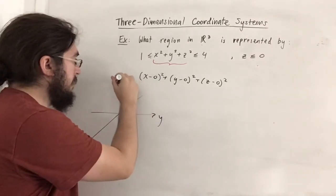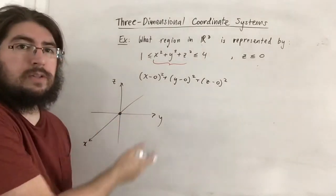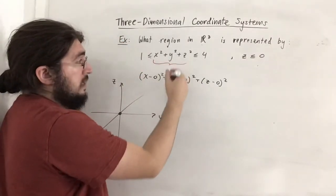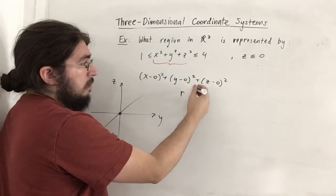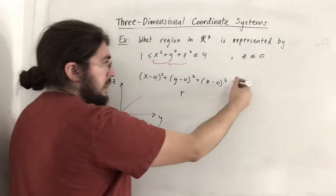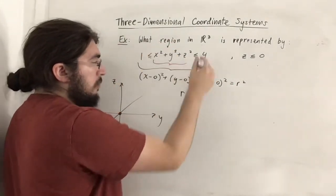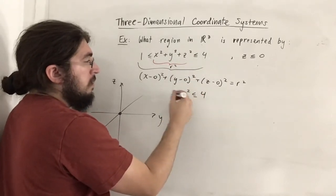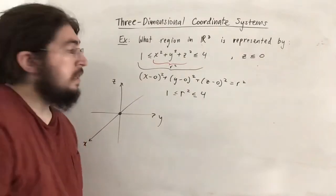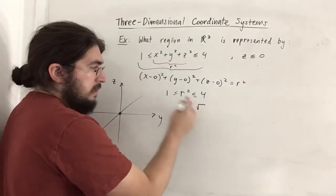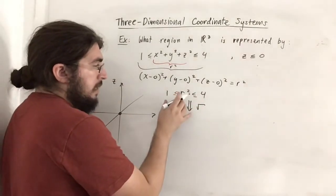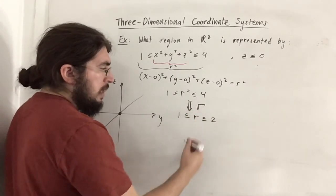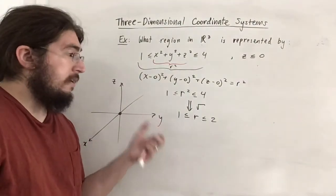The origin is right here. This inequality tells us that x² + y² + z² equals r², so r² must be between 1 and 4. If we square root all three parts — all positive numbers — we get 1 ≤ r ≤ 2. So the radius of this sphere must be between 1 and 2. We graph spheres of radius 1 and radius 2 — so that's 1 and 2 in each direction.